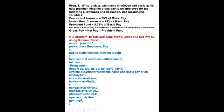We are taking the data type double because we will divide by 100 for dearness allowance, 100 for house rent allowance, and 100 for provident fund. Since the value will come in decimal, we take this data type as double. Now first we will enter the name of the employee and basic pay, so: System.out.println("Enter the name and basic pay of an employee").